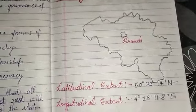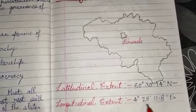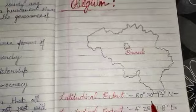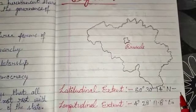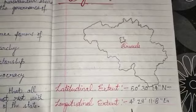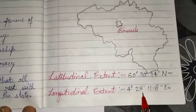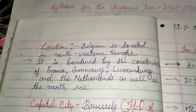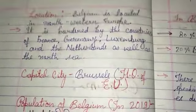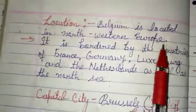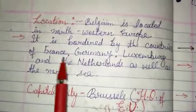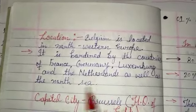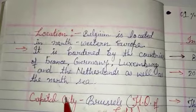The latitudinal extent of Belgium is 50 degrees 30 minutes 14 seconds north, and the longitudinal extent is 4 degrees 28 minutes and 11.8 seconds east. Belgium is located in northwestern Europe. It is bordered by the countries of France, Germany, Luxembourg and the Netherlands, as well as the North Sea.